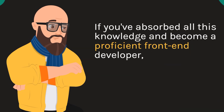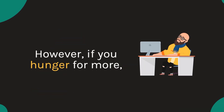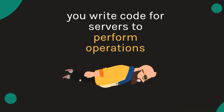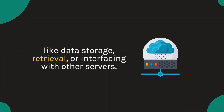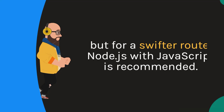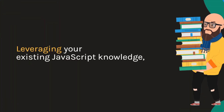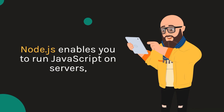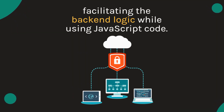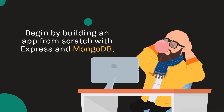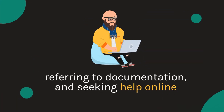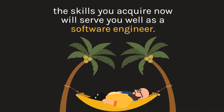If you've become a proficient front-end developer, you could consider your journey complete. However, if you hunger for more, it's time to delve into back-end development. In the realm of back-end development, you write code for servers to perform operations like data storage, retrieval, or interfacing with other servers. Java with Spring and Python with Django are viable options, but for a swifter route, Node.js with JavaScript is recommended. Leveraging your existing JavaScript knowledge, Node.js offers a seamless transition to server-side programming. Express, a popular library, simplifies back-end development. Begin by building an app from scratch with Express and MongoDB — a NoSQL database — using tutorials like the one by Traversy Media. Embrace the learning process by tackling challenges, referring to documentation, and seeking help online. The skills you acquire now will serve you well as a software engineer.